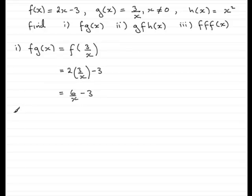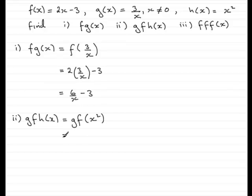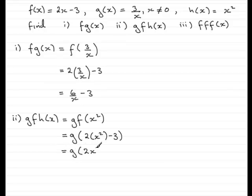So that's fg of x. Now let's look at part 2: gfh of x. What we have is g of f of h of x. And h of x is x squared. Next, we have g of f of x squared. We have to replace any x in f of x with x squared, so that becomes 2 lots of x squared minus 3. And if I simplify this, we have g of 2x squared minus 3.